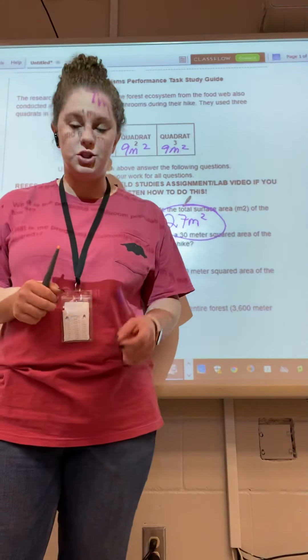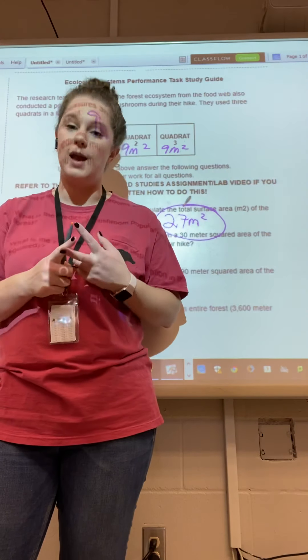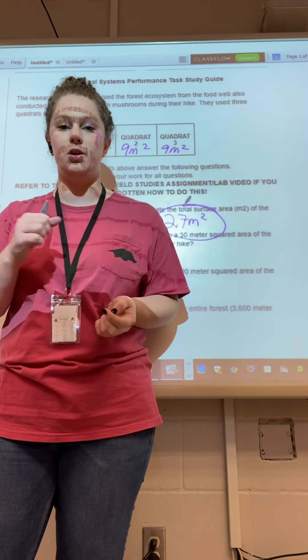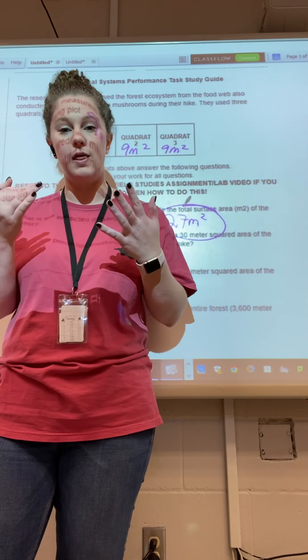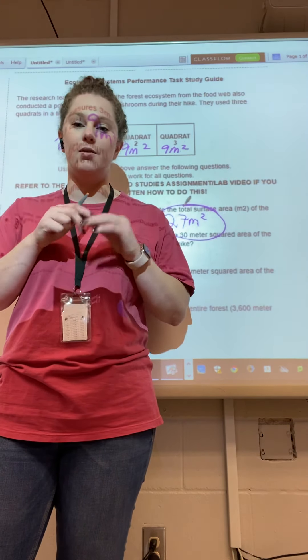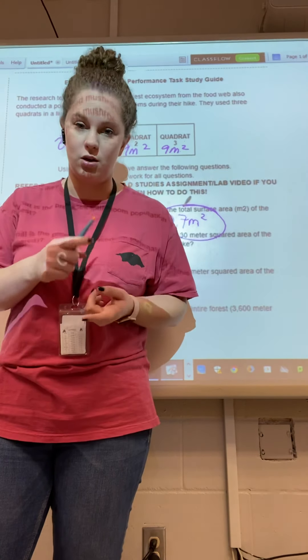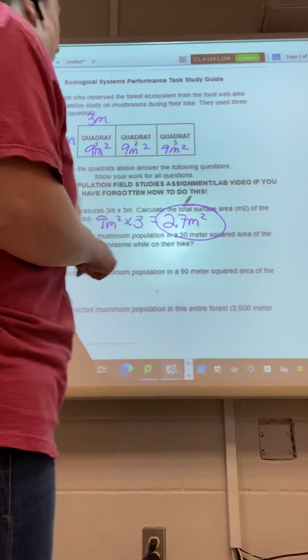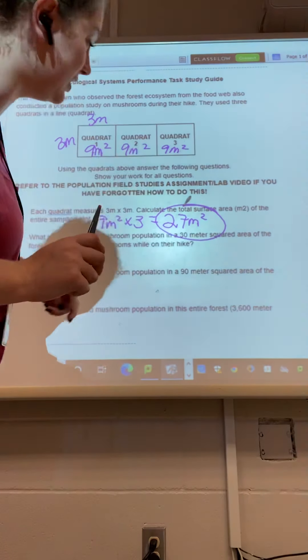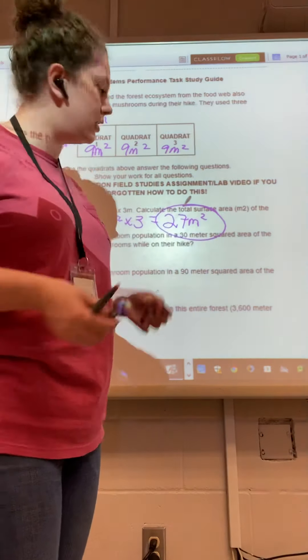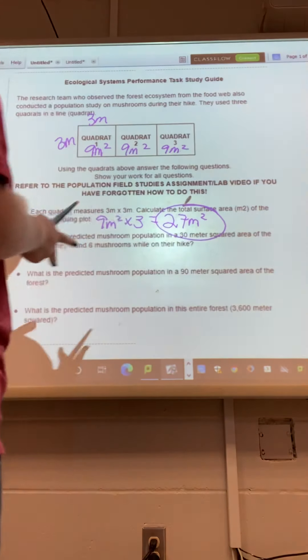You will be expected to show your work on the study guide and on your test. So whether you're doing the math on paper and then putting it on the thing, or if you're typing out this divided by this, that's fine either way, but you have to show your math to get all the points. Just a heads up. So if you turn in a study guide or a test with just 27 meters squared, you're not going to get the points.